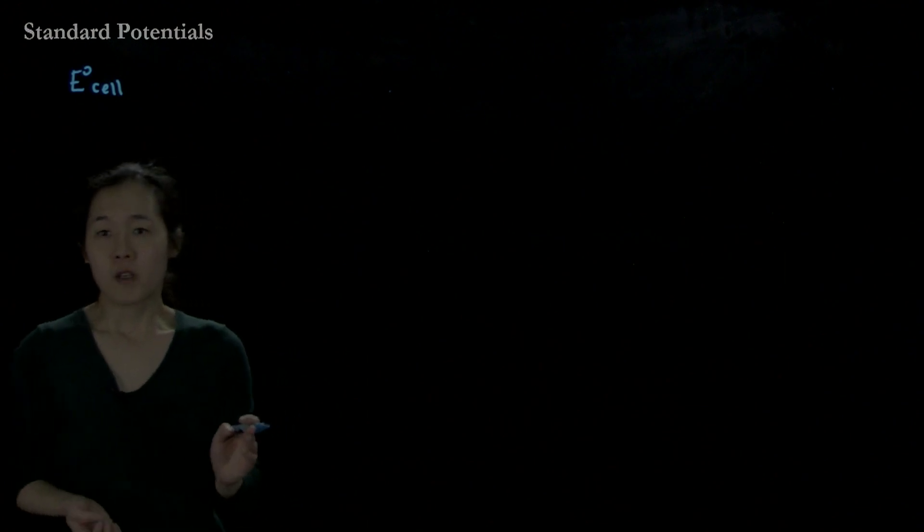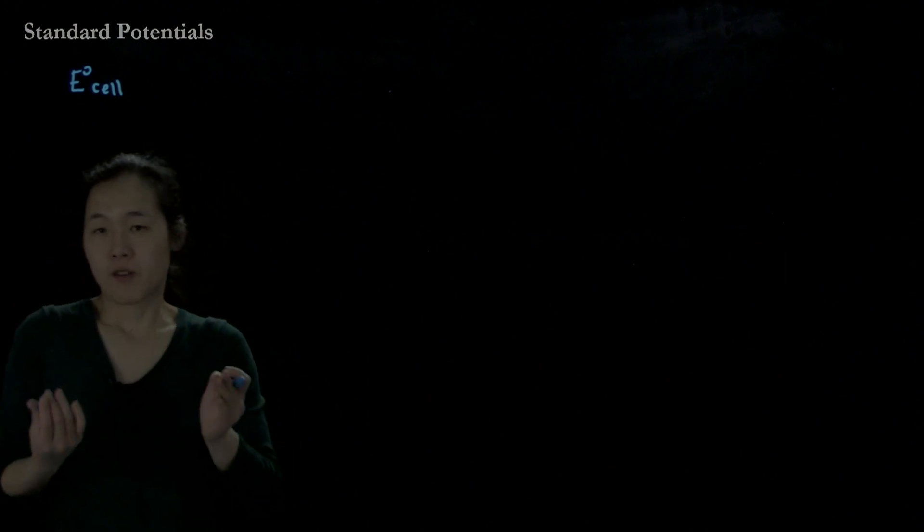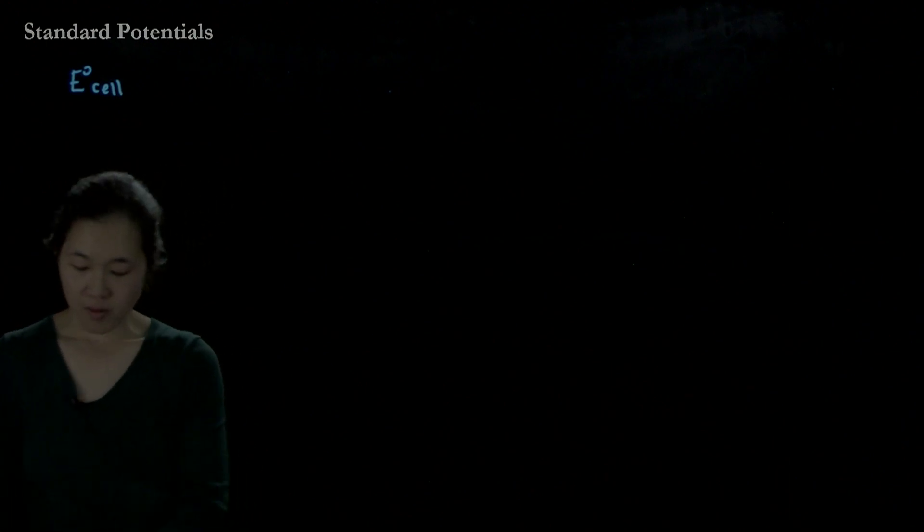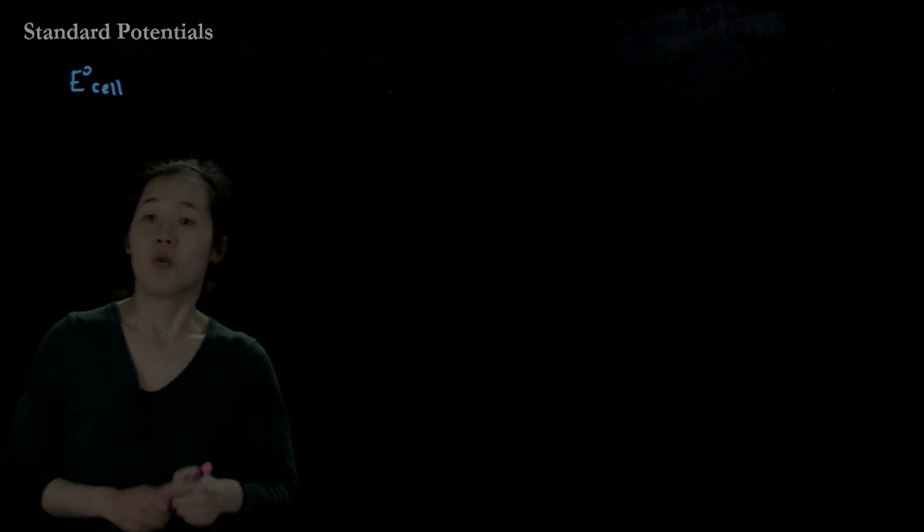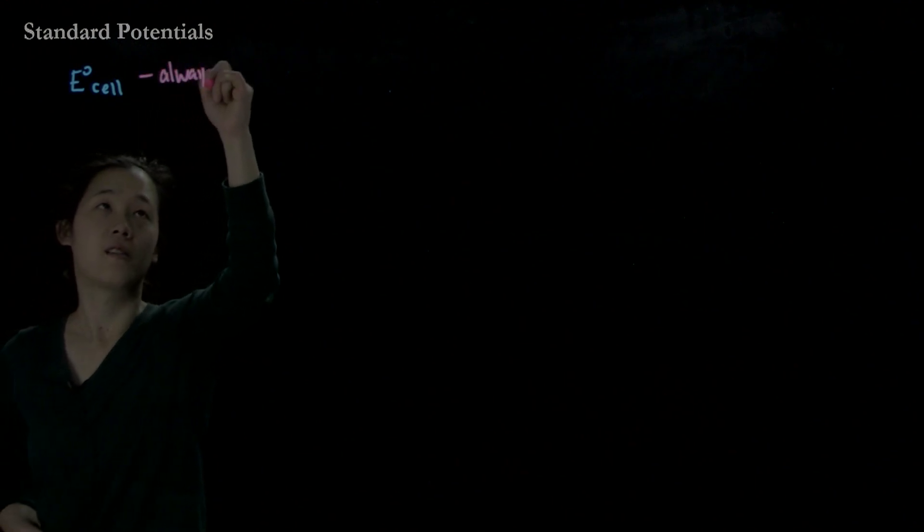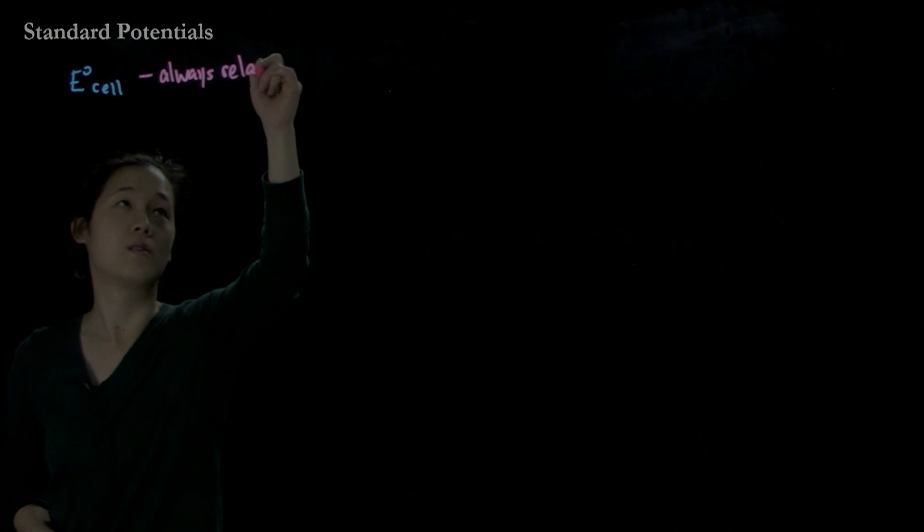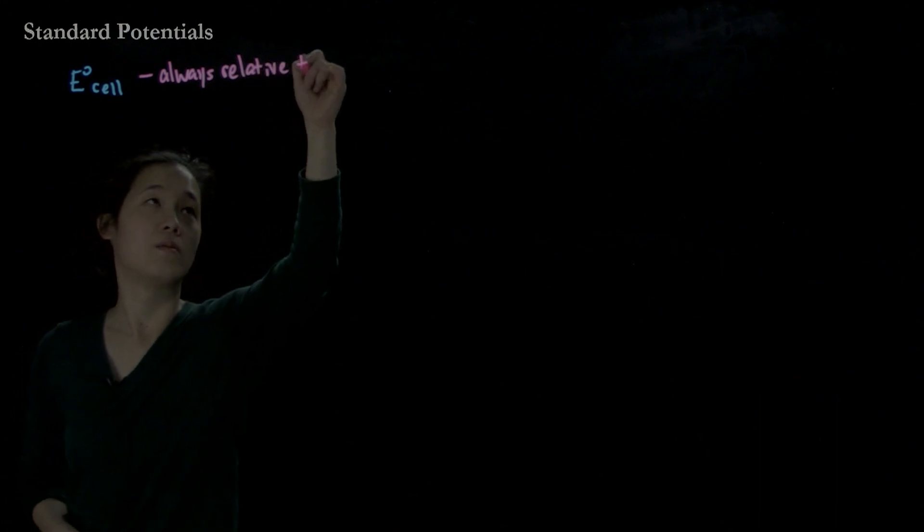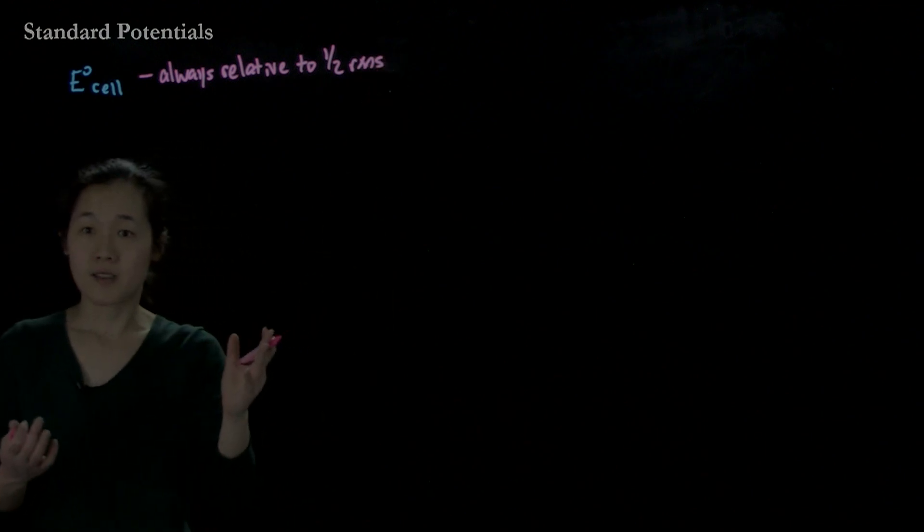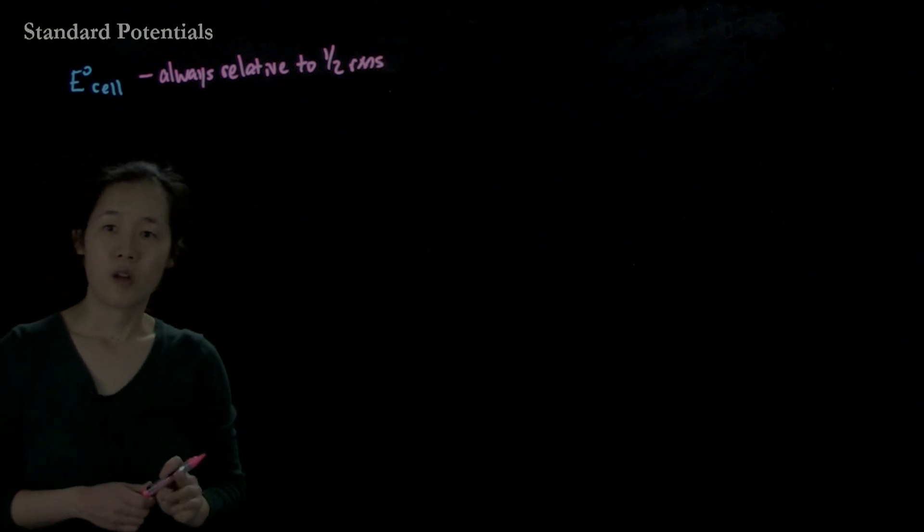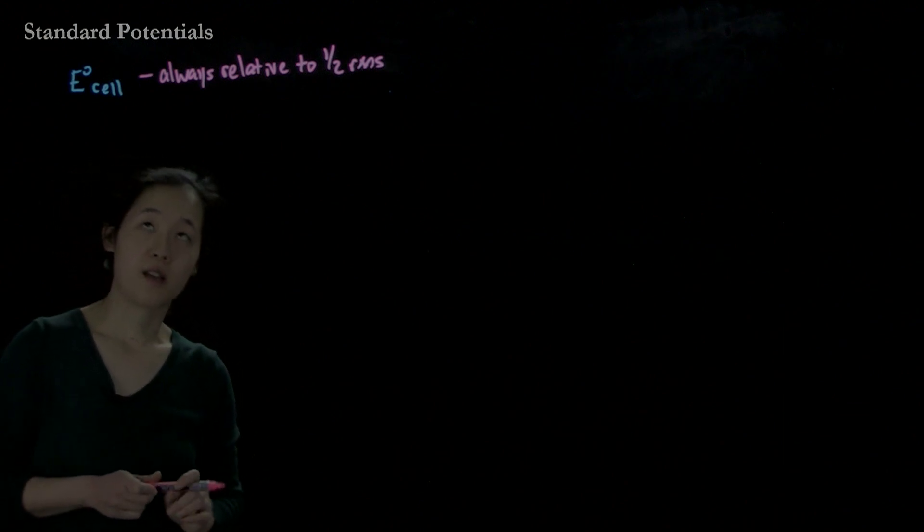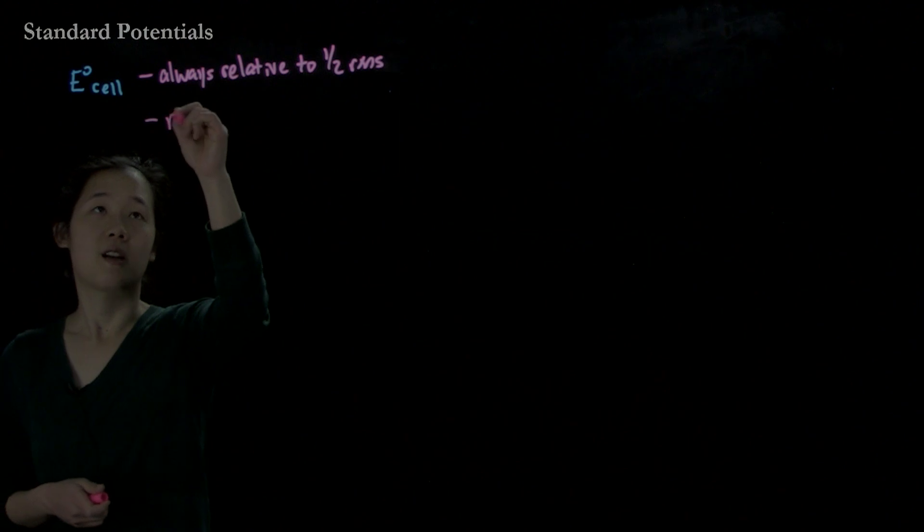The problem with that is, what if we don't want to actually run the experiment every time? The major problem is that this E cell is always relative to your half reactions. If you're changing your reactants, your potential is going to change. So it's really difficult to maybe predict unless we have a standardized way. We need a standardized way.